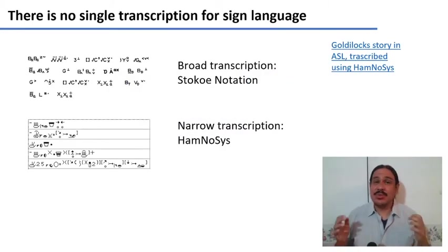The first thing I want to tell you is that there's no single system. In spoken languages, we have IPA and that's pretty much what everyone uses. But for sign languages, there's no agreed upon system. There's several of them. For example, STOCO has a broader transcription. It doesn't have as much detail. The HamNoSys system, which is the one that I'll show you here, has narrower transcription.